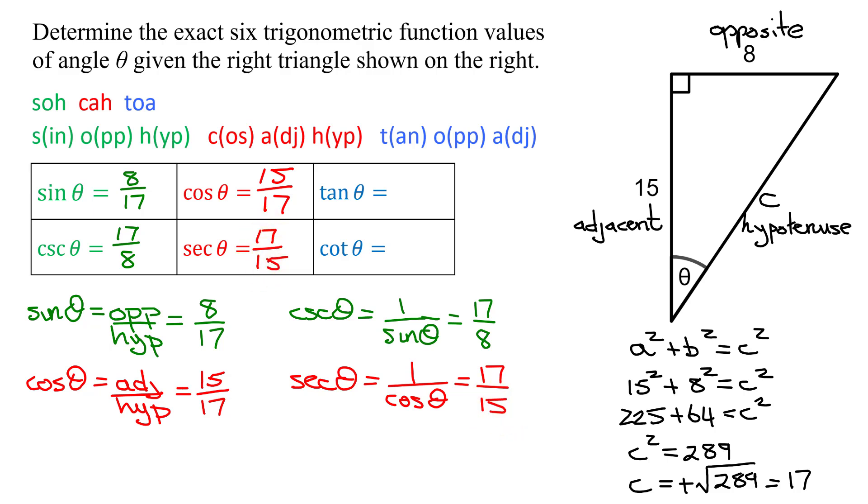And lastly, I need to find the tangent of theta and its reciprocal. The tangent of theta is opposite over adjacent. The opposite side was 8, adjacent was 15. So it's 8 divided by 15.